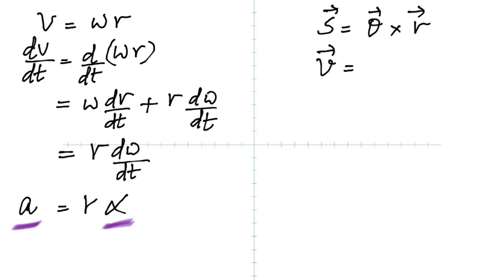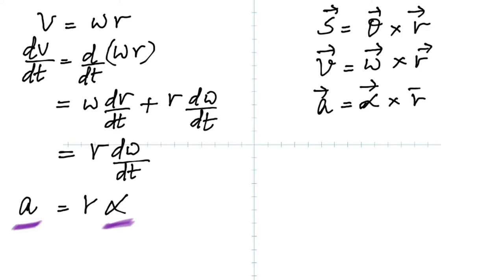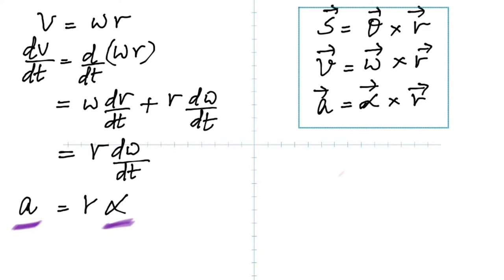So now we have all three. Linear acceleration is the cross product of angular acceleration and the radius. That's three important cross products right there.